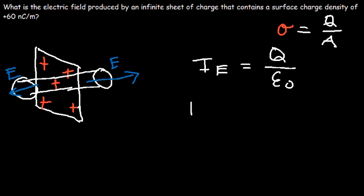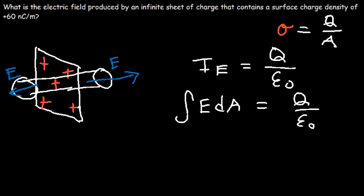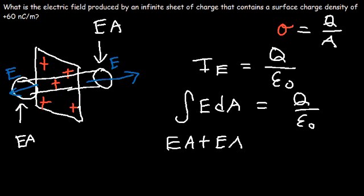The electric flux can be calculated by taking the integral of the electric field times the change in area, and that should equal Q over epsilon-naught. Now the total electric flux is the sum from the right side, which is EA — the electric field times the area of the circle — and on the left side, it's also EA. So we have EA plus EA, which equals Q over epsilon-naught.